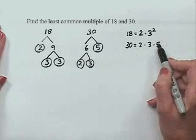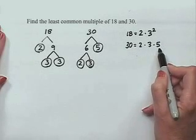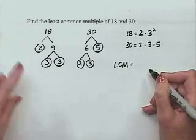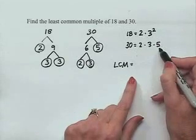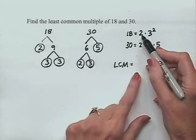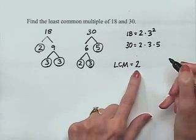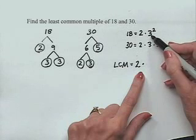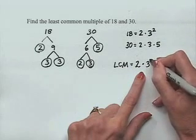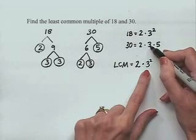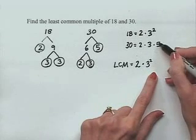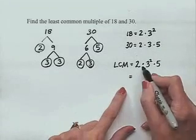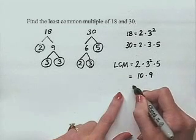To be a multiple of 18, it must include all factors of 18; to be a multiple of 30, it must include all factors of 30. For the LCM, we include each factor at its highest power. We include the factor of 2. We see 3 squared in 18 and 3 to the 1st in 30; we need 3 squared. Since 5 appears in 30, we must include it. So the LCM is 2 times 3 squared times 5: 2 times 5 is 10, times 9 is 90.